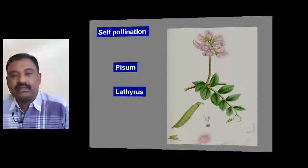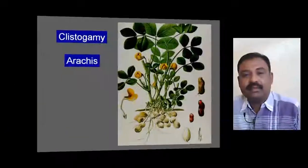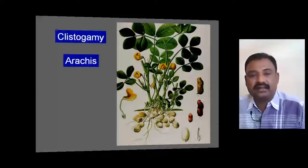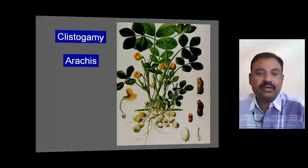In some Fabaceae members, self-pollination occurs — for example, Pisum sativum and Lathyrus. Some members of Fabaceae exhibit cleistogamy — for example, Arachis. In cleistogamy, pollination takes place in an unopened flower.